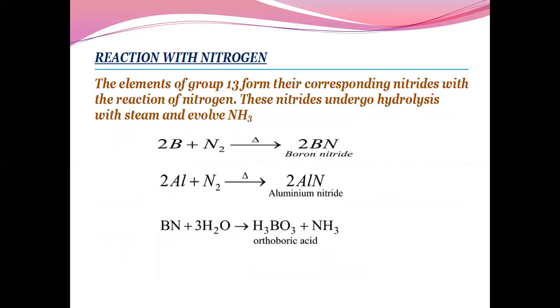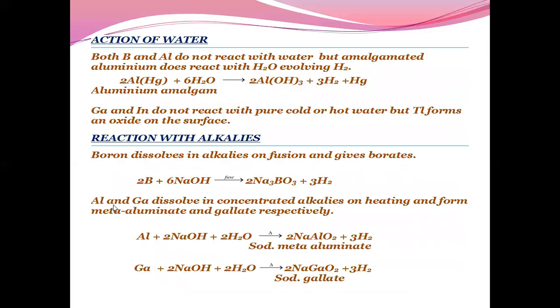Reaction with nitrogen: The elements of group 13 form their corresponding nitrides with nitrogen. These nitrides undergo hydrolysis with steam and evolve ammonia. So when boron and aluminium form nitrides, boron nitride when treated with steam gives orthoboric acid with the liberation of ammonia.